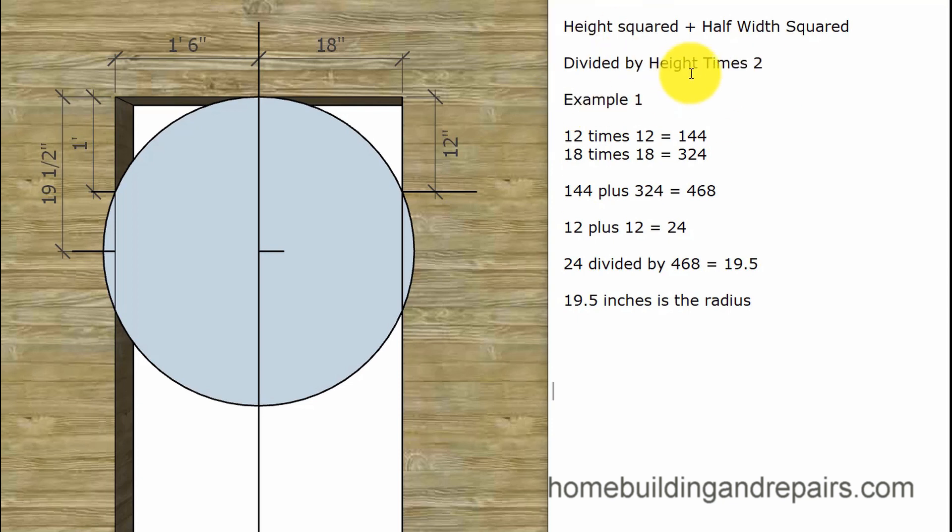Let's go ahead and forget about this for those of you who might be a little confused, and I'll walk you through example number one. 12 inches. Height squared is just simply multiplying the number times itself. 12 times 12 equals 144. Height squared. The half of the width squared would be 18 inches times itself. 18 inches equals 324. We add these two numbers together and that gives us 468.